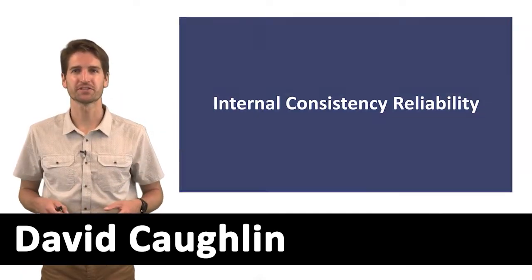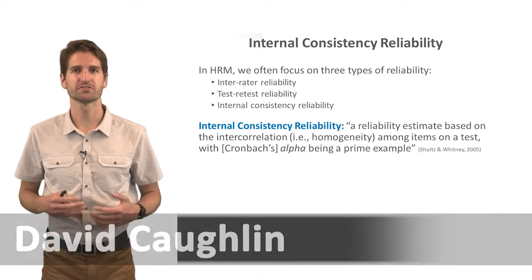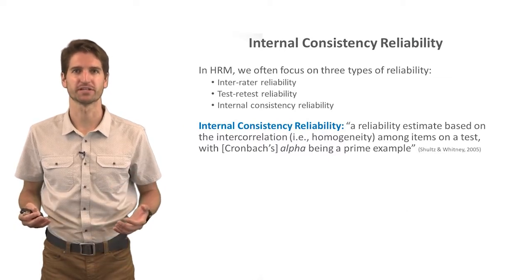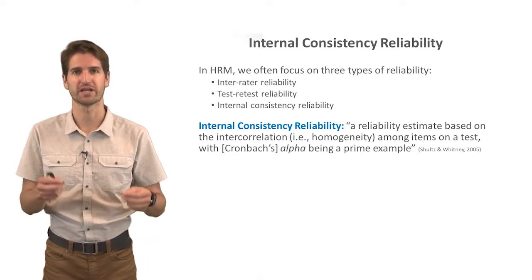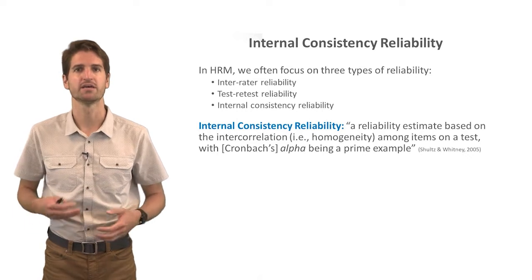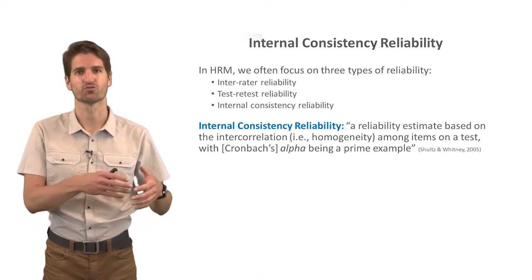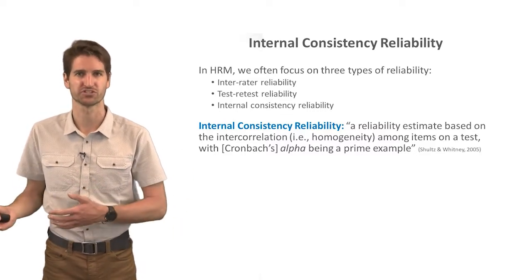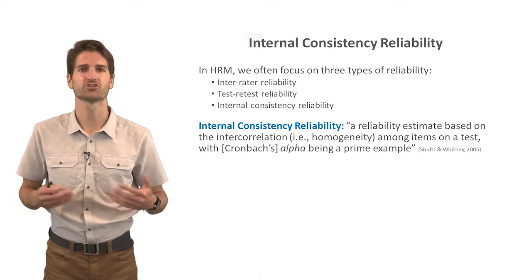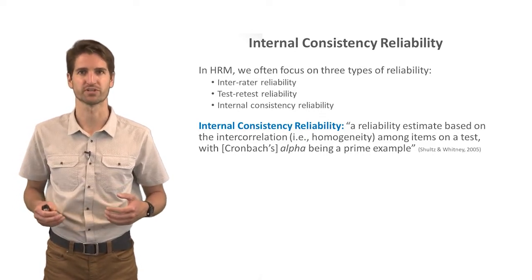In this lecture, we're going to cover internal consistency reliability. In human resource management, we often focus on three types of reliability: inter-rater reliability, which has to do with the consistency between two or more raters in how they're rating a common person or object; test-retest reliability, which has to do with the consistency in a group of people's test scores from one administration to another of the same or a very similar test; and finally, internal consistency reliability.